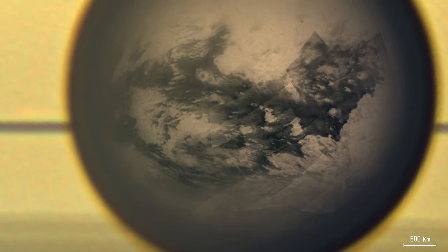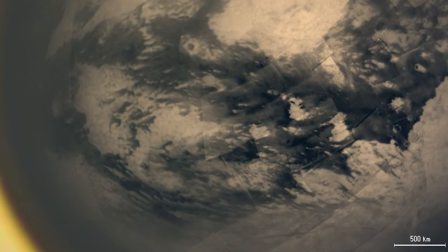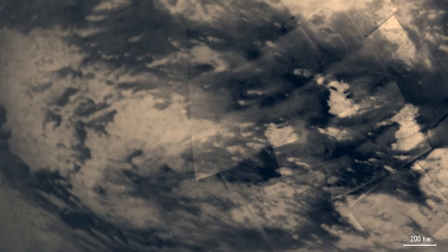Features on Titan's surface appear. The dark regions along Titan's equator are mostly dune fields. The brighter regions are highlands a few hundred meters high.